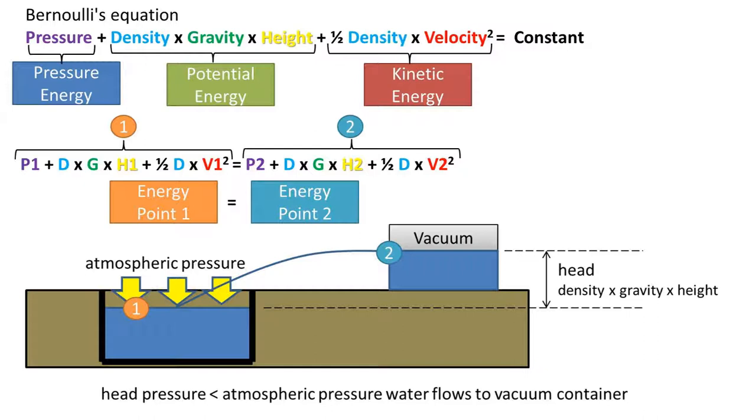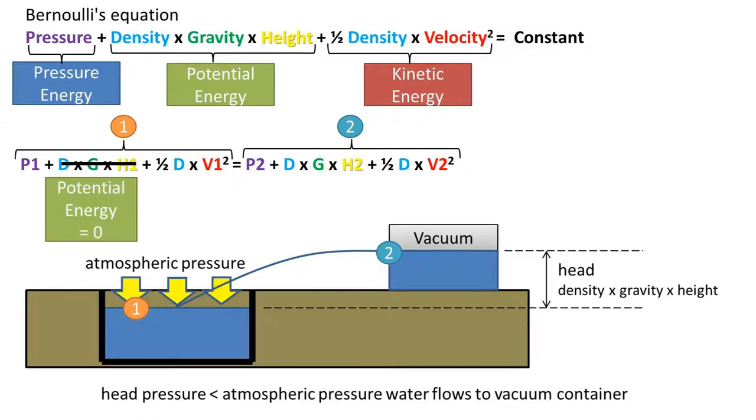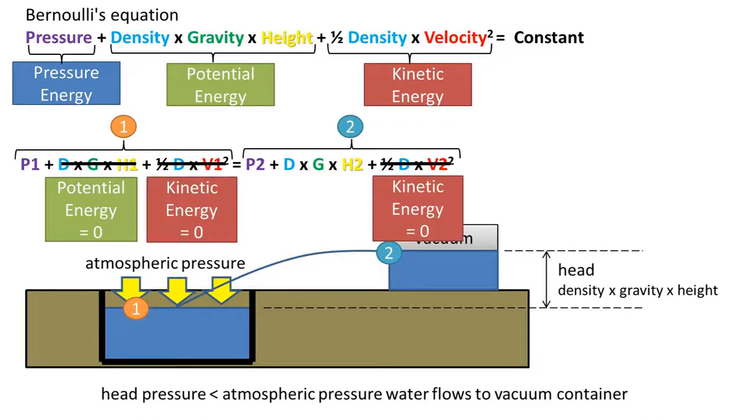So now we need to see what cancels out. First, we have that the potential energy at point one is zero because we'll be defining the height as zero at this point. Next, we have that the kinetic energy is zero because the waterline on the first reservoir is always constant and not moving. And we are interested in the point at which the water has stopped flowing at point two in the pipe. And finally, we have a vacuum at point two, so the pressure energy is equal to zero at point two.